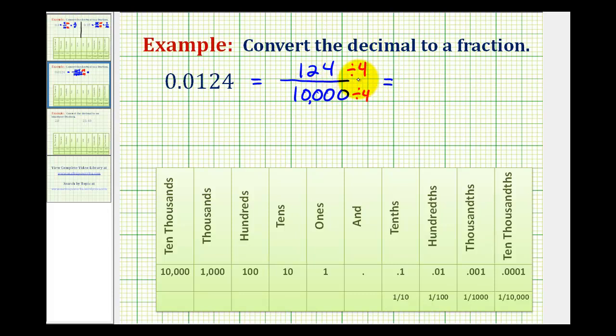124 divided by 4 would be 31, and 10,000 divided by 4 is 2,500. And 31 is a prime number, so this fraction is in simplest form.